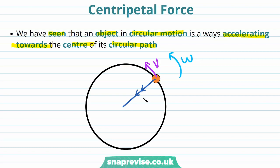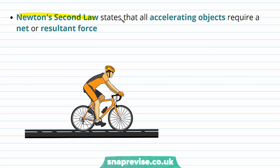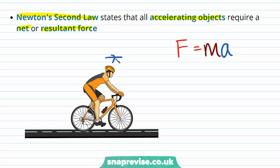So this object is going to experience a centripetal acceleration towards the centre of its path. Newton's second law states that all accelerating objects require a net or resultant force. Newton's second law states that force F is equal to mass of an object M times acceleration A.